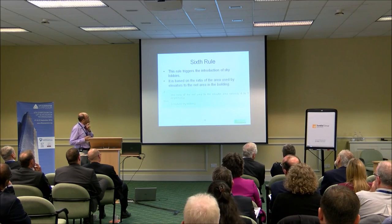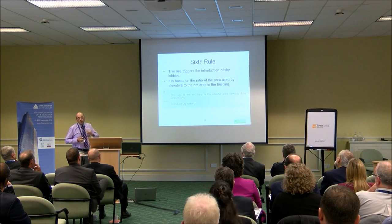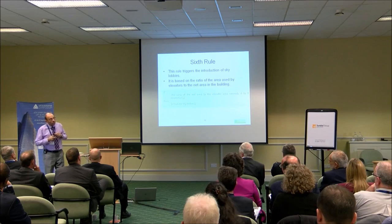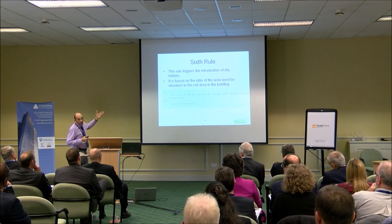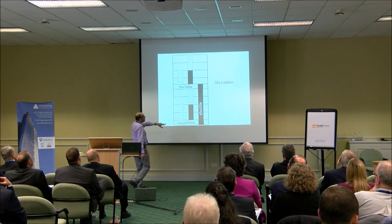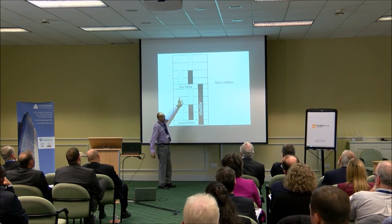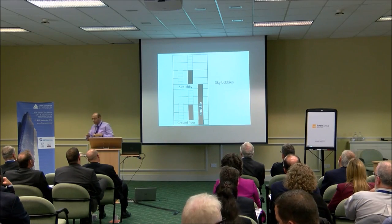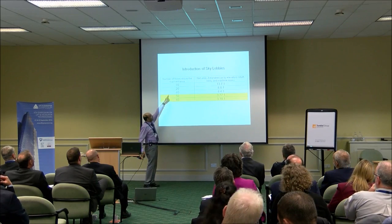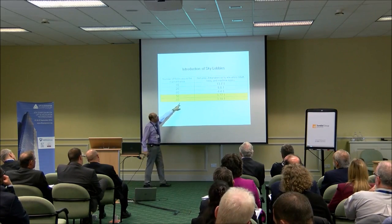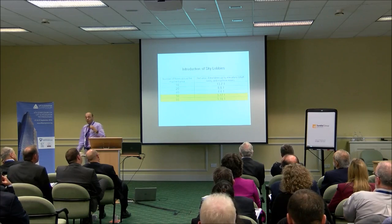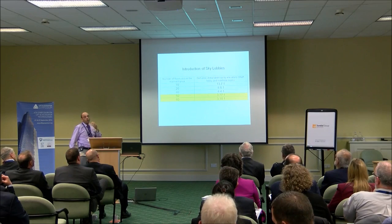The sixth rule — I think one of the most important — asks: when do you trigger sky lobbies? My argument is you trigger sky lobbies when the area being used in the building becomes excessive. I use a figure of one to four — others could use different figures. This is the trigger for sky lobbies: you reach a stage where the lift area ratio exceeds one metre of lift space for every four metres of net building area, making the building unsustainable.